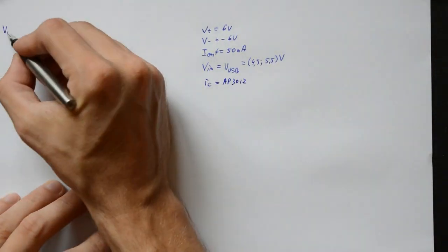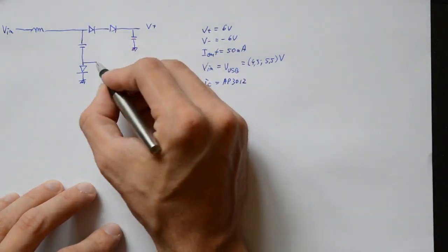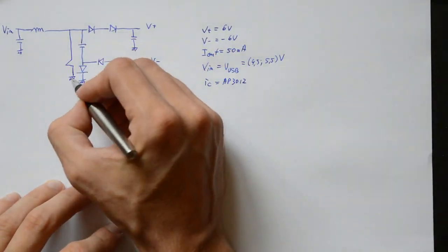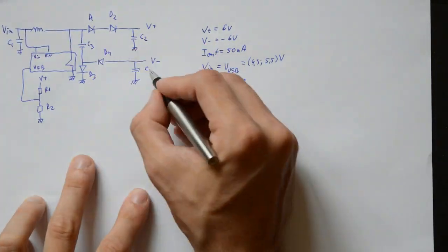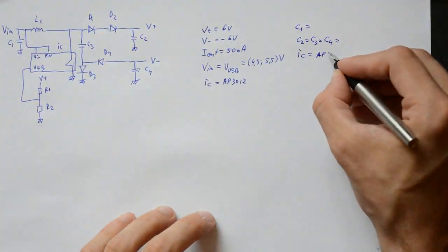To keep things simple, I will use as boost converter IC, the AP3012, with fixed frequency and integrated switching transistor. It won't be the most efficient circuit, but it will be simple and small.